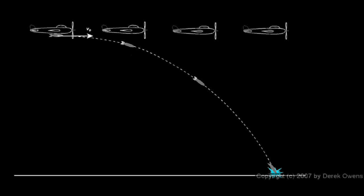The initial velocity is the initial velocity of the plane. In this case, the bomber is flying horizontally. That means the bomb has an initial horizontal velocity. And in this case, it doesn't have any initial vertical velocity.